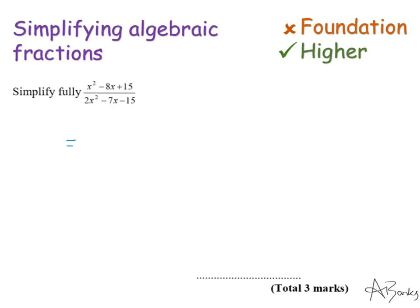So the numerator factorises to x minus 3 and x minus 5. And the denominator, now I know that either an x minus 3 or an x minus 5 must appear in the denominator so that it will cancel out. So it just gives me a bit of a clue as to how to factorise the bottom. So the bottom is going to factorise to 2x plus 3 and x minus 5. You might find it helpful to do the numerator first and then it gives you a bit of a clue.